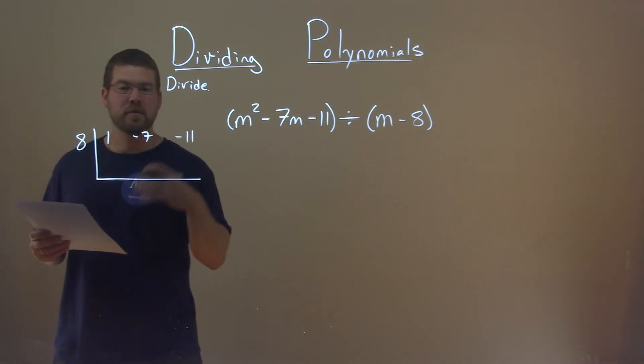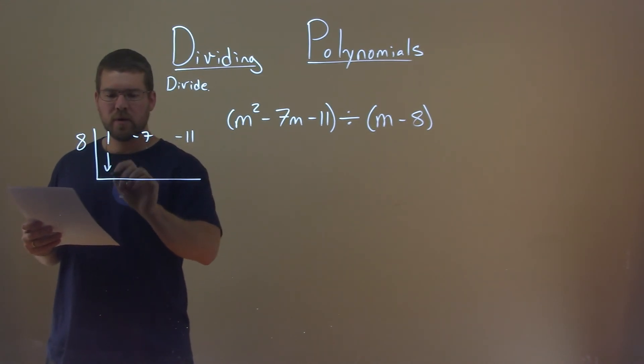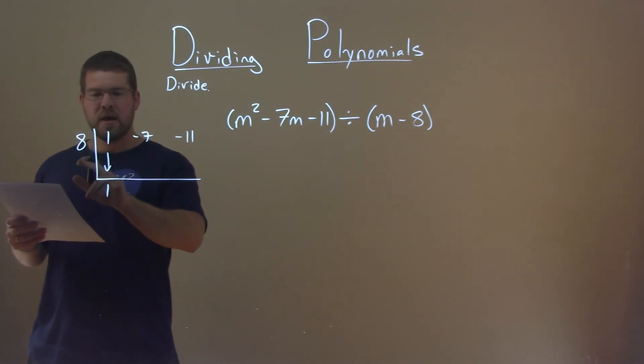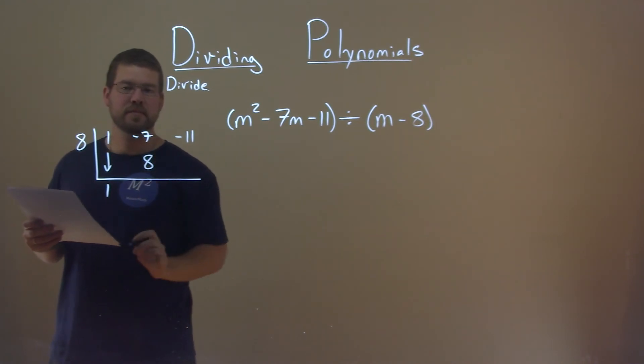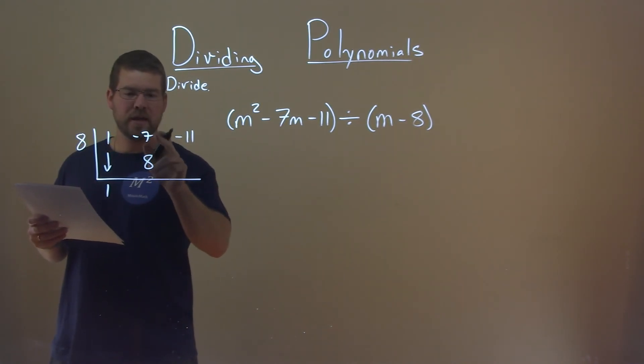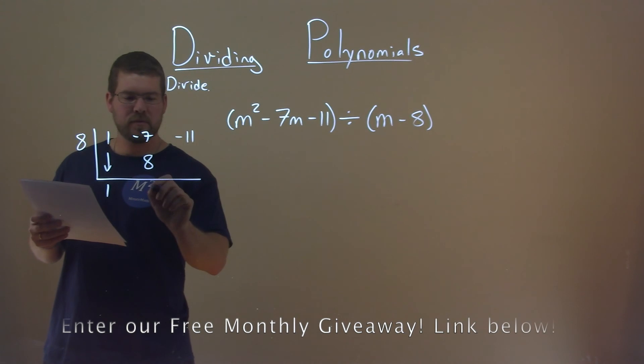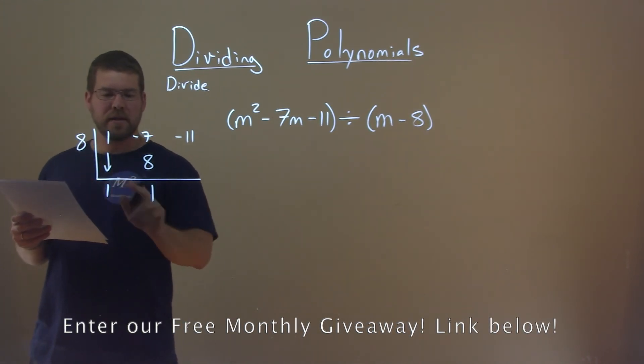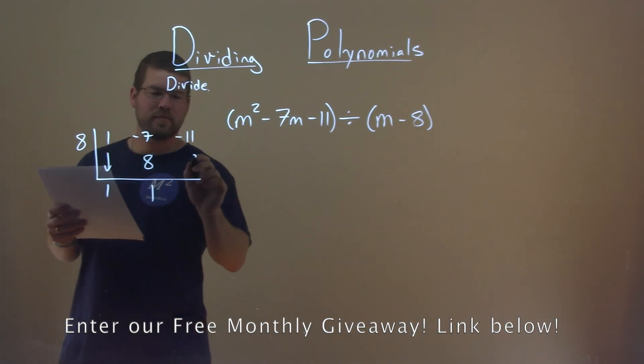All right, let's follow our steps of synthetic division. Bring the 1 down, got it right there. 8 times 1 is 8. We add the two: negative 7 plus 8 is a positive 1, and then 8 times 1 is a positive 8 again.